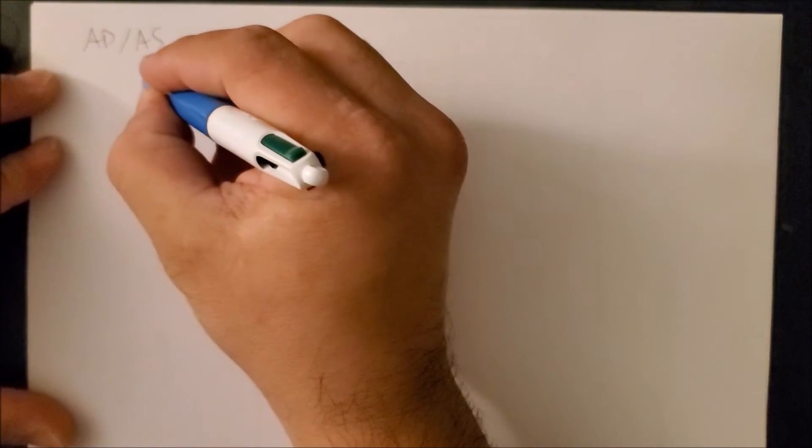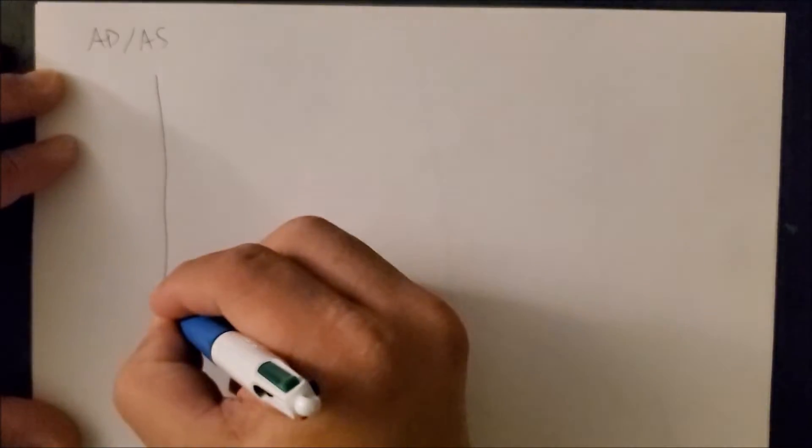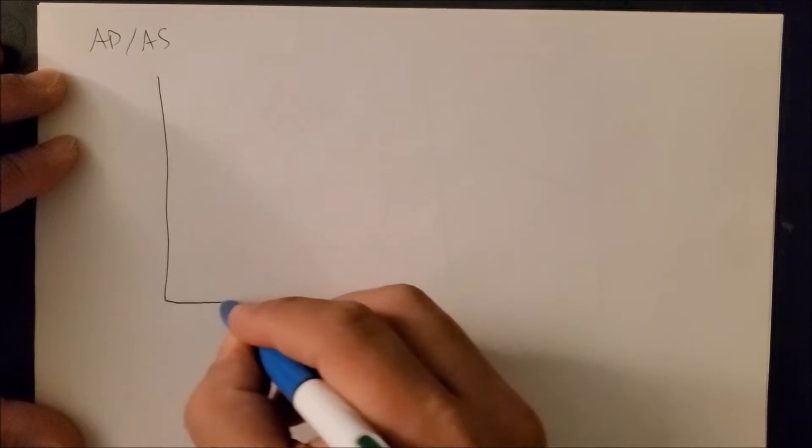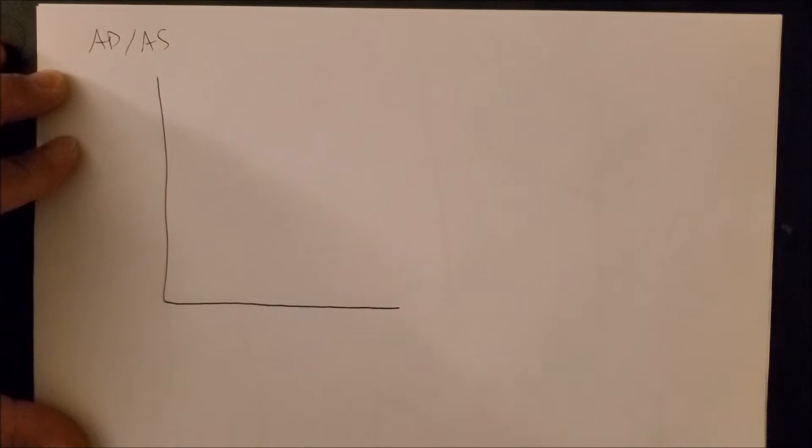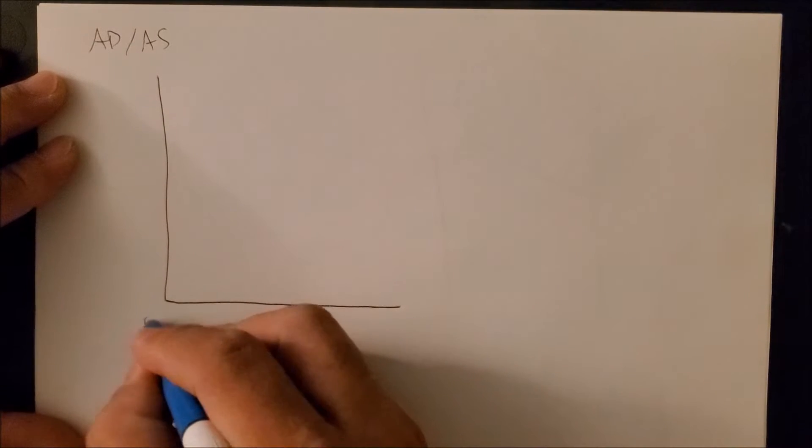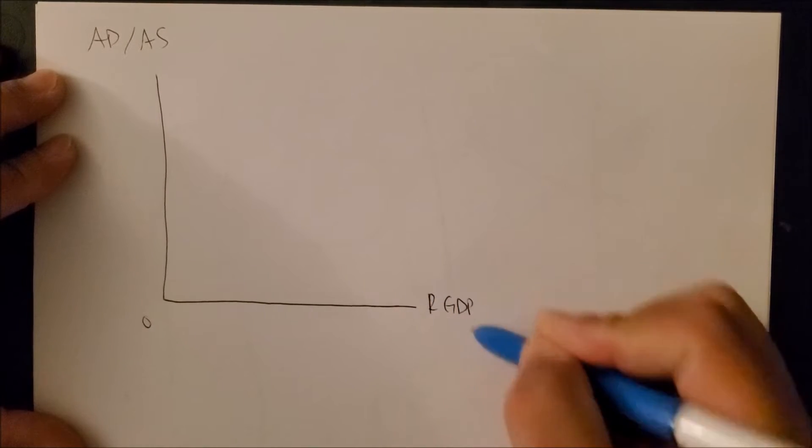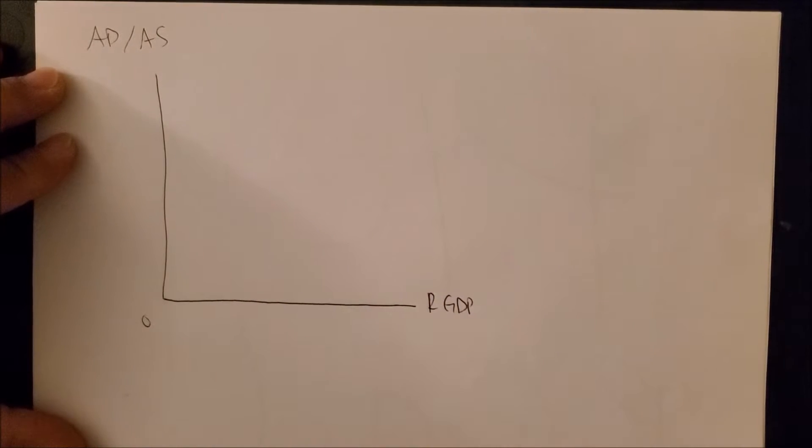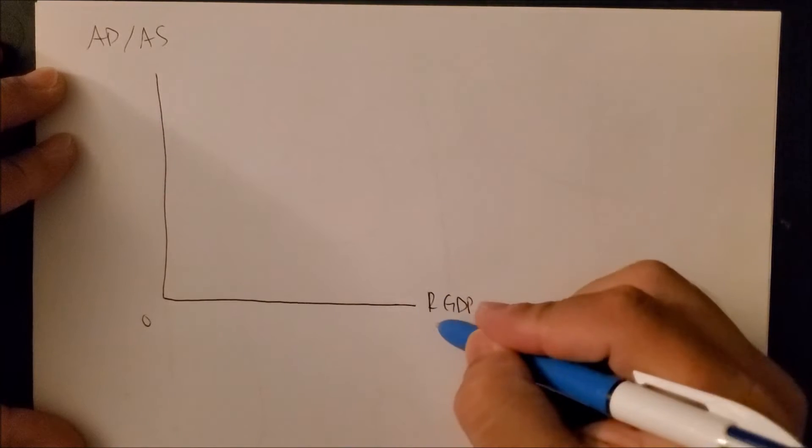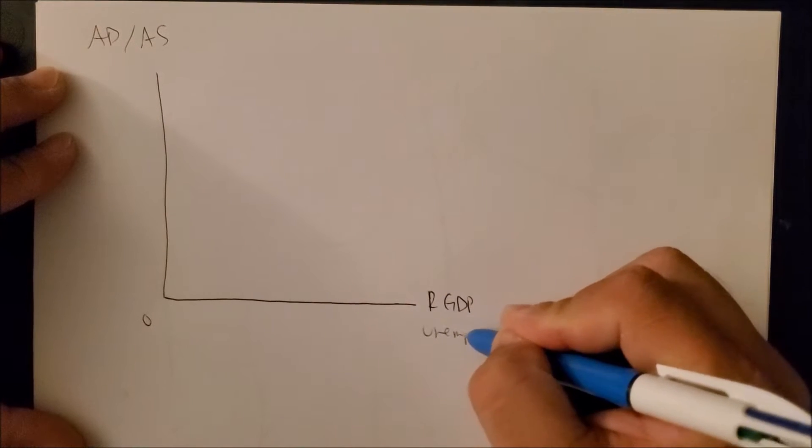Alright folks, welcome back. This is part two of the AD-AS curve, and now we can draw the graph and plot both AD and AS curves on the graph. So again, here we have on the x-axis our real GDP, our GDP. We could put, if you want to, at the very bottom unemployment, and again both are inversely related.